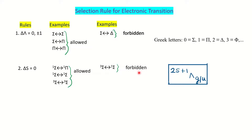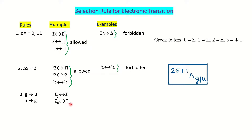The third selection rule: gerade to ungerade (g→u) or ungerade to gerade (u→g) transitions are allowed. g→g and u→u transitions are forbidden. For example, Σg→Σu is allowed, Σg→Πu is allowed, while Σg→Σg or Σu→Σu are forbidden transitions.